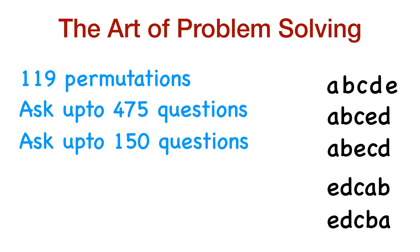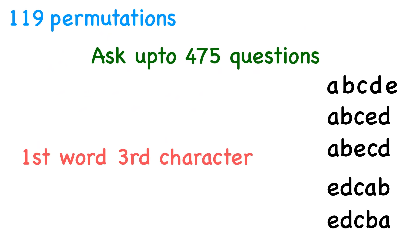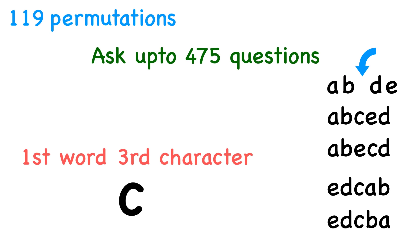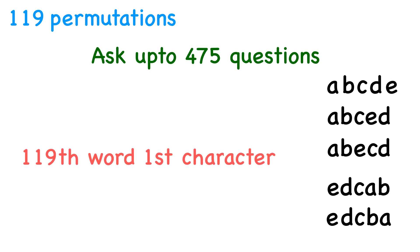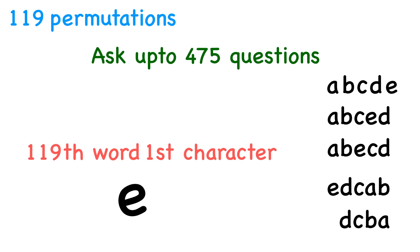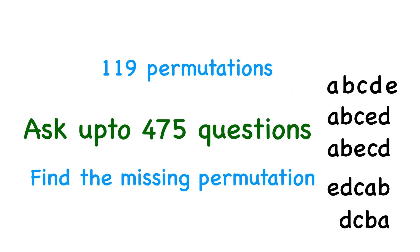Let's understand what these questions mean. One possible question you can ask is: give me the third character of the first word. And I'll say the third character of the first word is C. Another question: give me the first character of the 119th word, and I'll say that comes out to be E. So you really don't know what's going on under the hood — what those 119 permutations are — you can only ask questions like these to find the missing permutation.